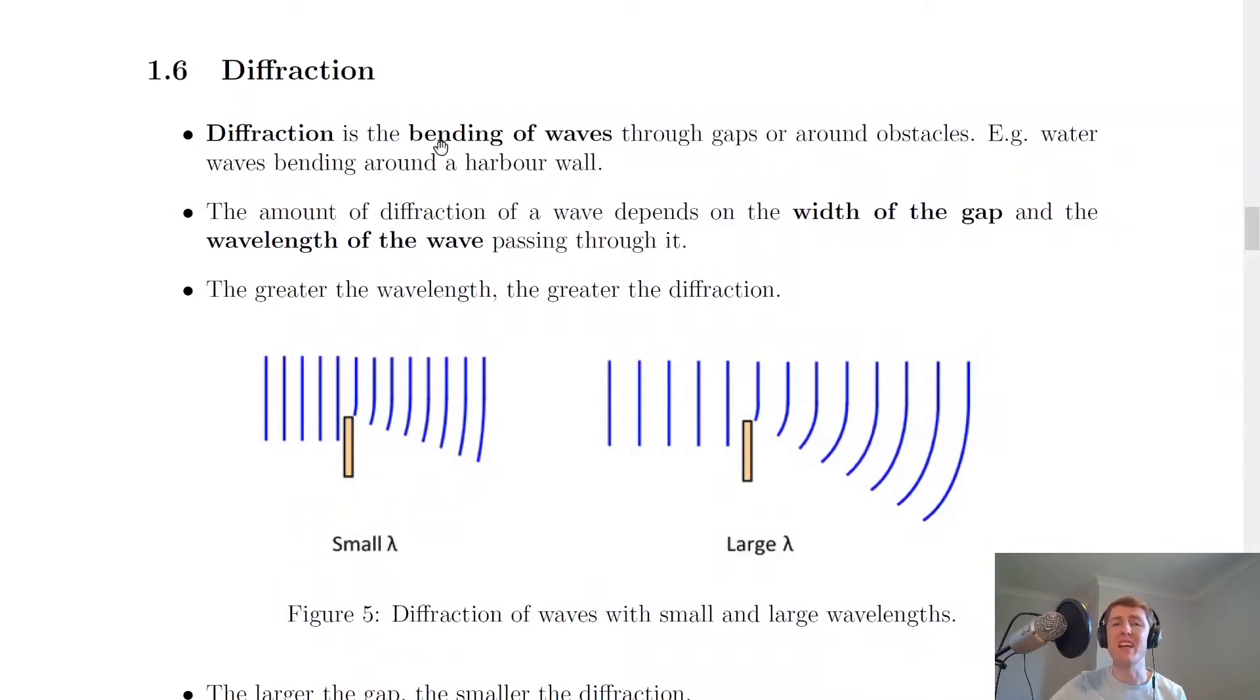Now the diffraction of a wave is defined as the bending of waves through gaps or around obstacles. So it's just a fancy name for the bending of waves. For example, water waves could bend around a harbour wall or sound waves can bend around a corner.